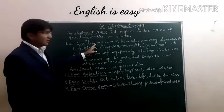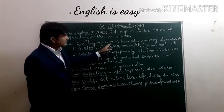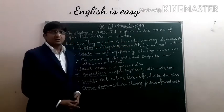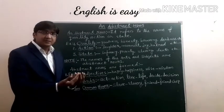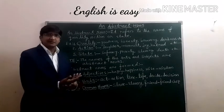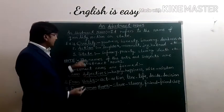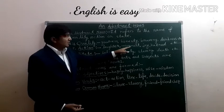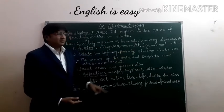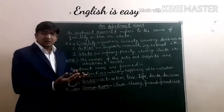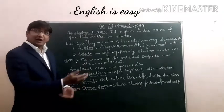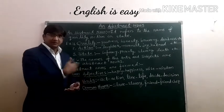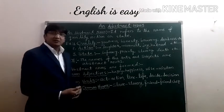Quality examples include goodness, honesty, bravery, darkness, sweetness, and bitterness. Next, action examples include laughter, movement, joy, hatred, invitation, and arrangement. Theft also comes under action. Like that, there are many words that come under this category.